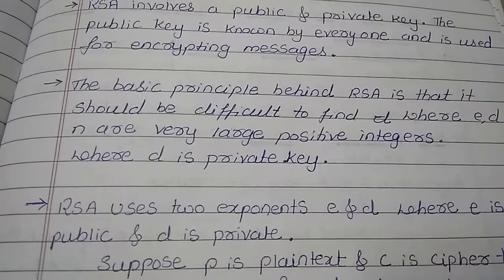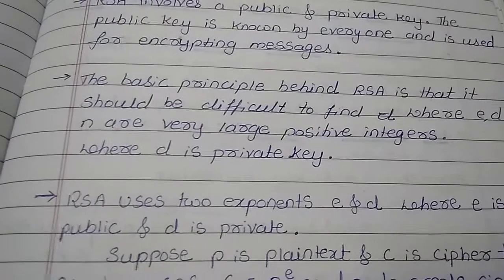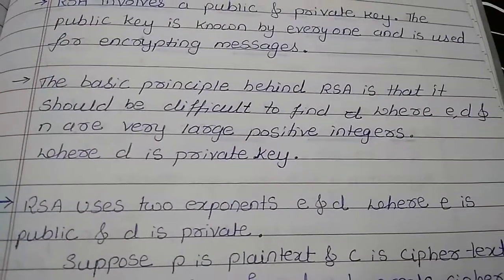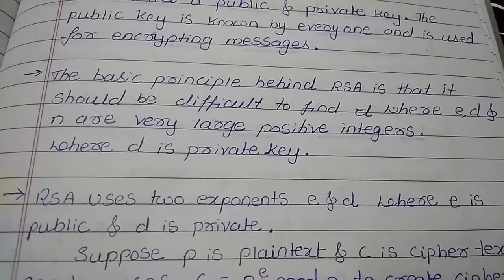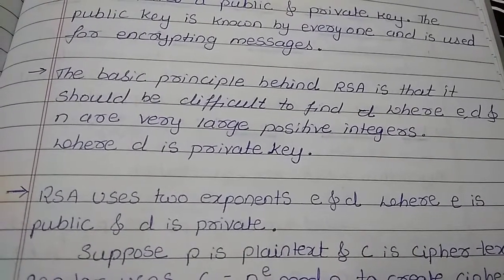The basic principle behind RSA is that it is very difficult to find D where D is the private key and E is the public key. E, D and N are very large positive integers.